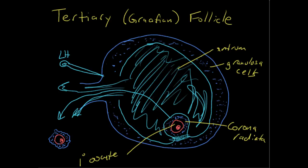However, once that oocyte is pushed over to the side. Surrounded by a corona radiata. Only held loosely to the wall of the antrum. We now have a tertiary or Graafian follicle. And that's the one that will actually undergo ovulation.